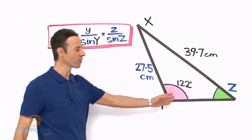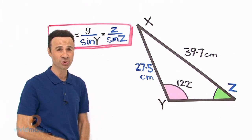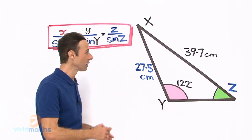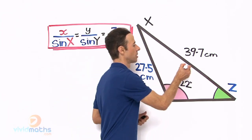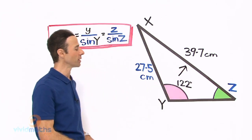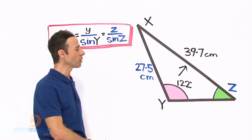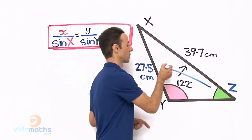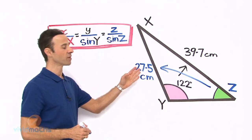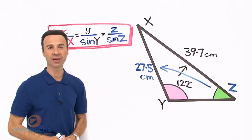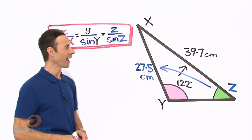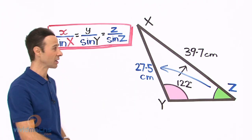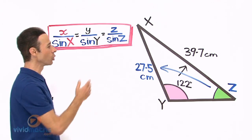We have angle Y which is 122 degrees, and directly opposite that is the length 39.7. The angle Z that we are looking for is directly opposite the length 27.5. We are going to take these pieces of information and plug them into the sine rule formula.